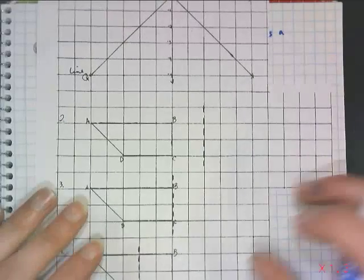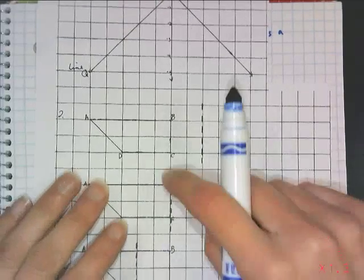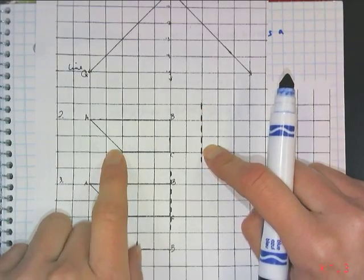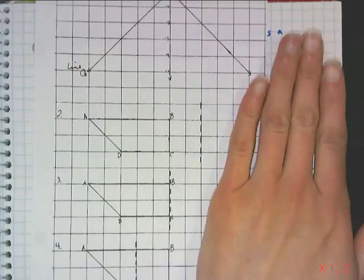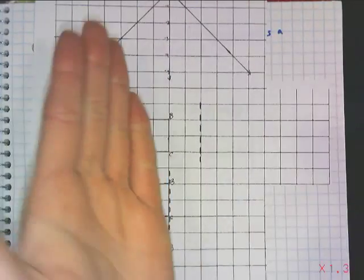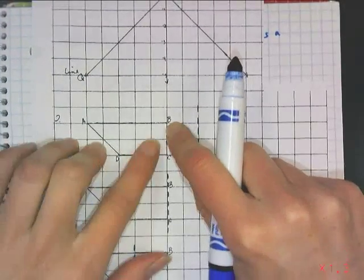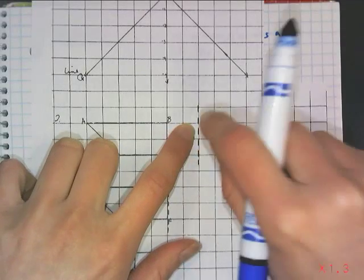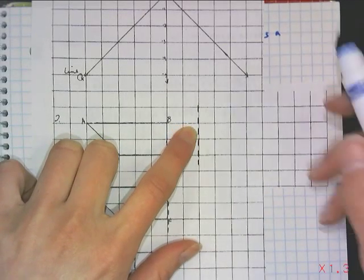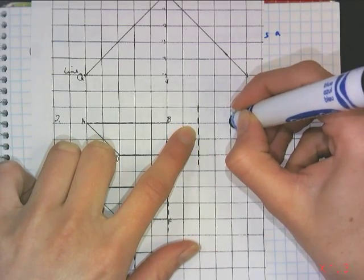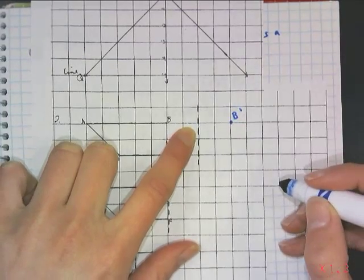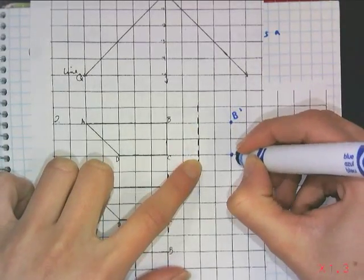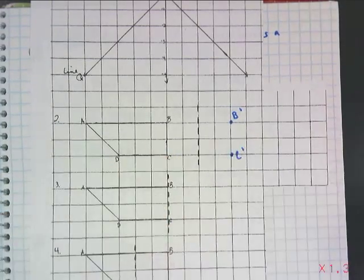To demo what a reflection is: if the dotted line is the line of reflection, then the entire figure has to be flipped over the same distance from that line. B is 2 away from the line of reflection to the left — so B prime goes 2 away from the line of reflection on the right.